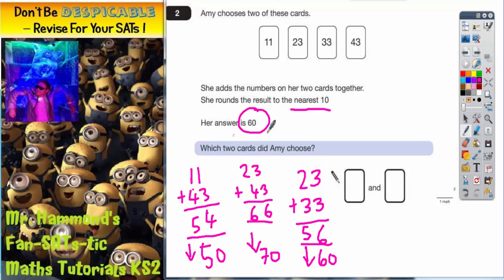Before too long we've actually got our answer. We're trying to round and make 60, so the two numbers that I've used to get that are 23 and 33.